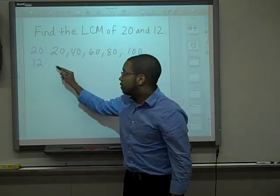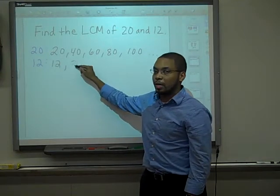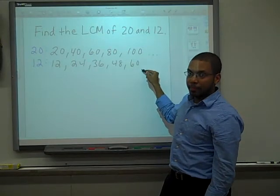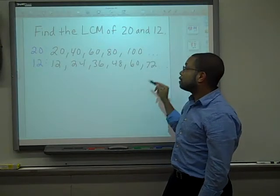The multiples of 12 would have been 12, 24, 36, 48, 60, 72, and so on.